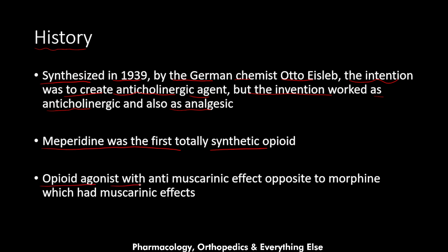Meperidine has anti-muscarinic effects, which is opposite to morphine. Morphine is also an opioid agonist but it leads to vagal stimulation. So regarding muscarinic effects, pethidine and morphine are opposite to each other, but regarding opioid action they are both agonists. Morphine has muscarinic effects related to it.